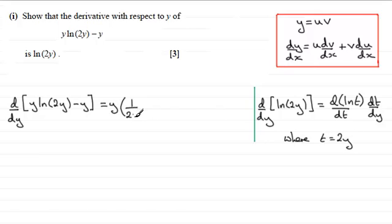So we've got 1 over 2y and we multiply this now by dt by dy. So if I differentiate t with respect to y this is just going to be 2. Okay so we've got the chain rule then within the product rule.